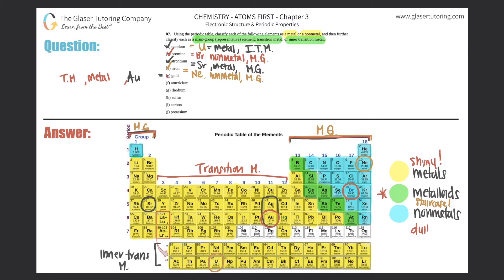Element f: Americium. Its symbol is Am, and it's element number 95. It's a metal, and since it's in one of the two periods at the bottom of the periodic table, it's an inner transition metal.